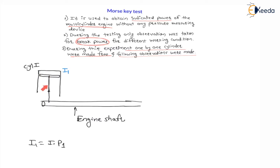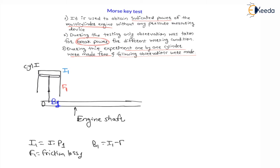As the piston is reciprocating inside the cylinder, there will be frictional losses. Therefore F1 is the frictional loss in the first cylinder. Because of this friction loss, the brake power available on the engine shaft is less than indicated power. Therefore the brake power from cylinder 1 on the shaft is B1, which is nothing but indicated power 1 minus F1. I1 is indicated power, F1 is friction loss, and B1 is brake power given by the first cylinder to the engine shaft.